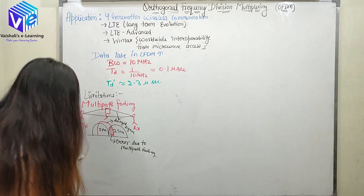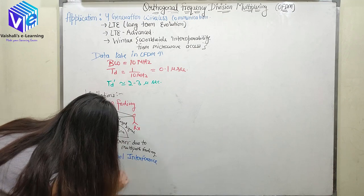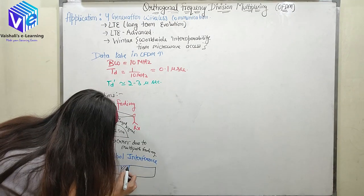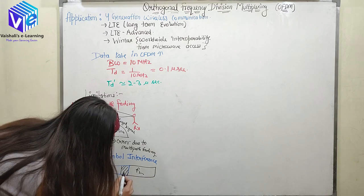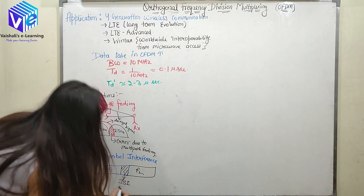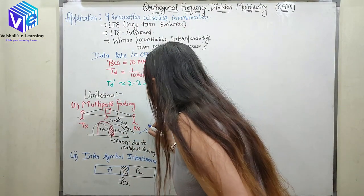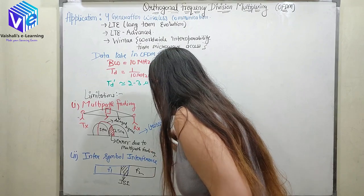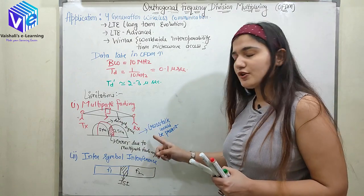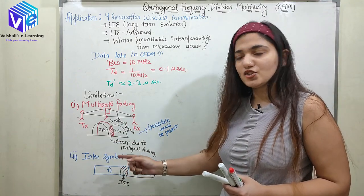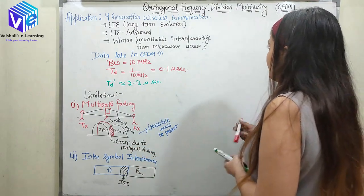This causes inter-symbol interference, which is the second limitation. If the first frequency band superimposes on the second frequency band, this is called inter-symbol interference. Due to this, cross-talk is present. So due to multipath fading, cross-talk would be present, and the second limitation is inter-symbol interference.